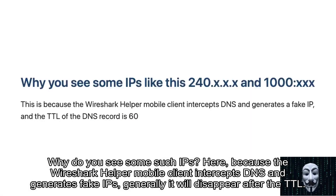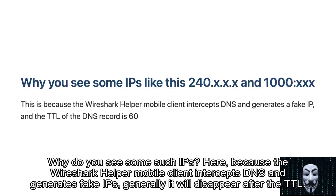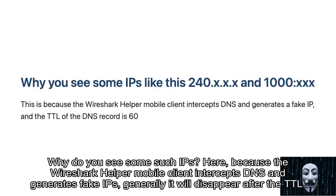Why do you see some such IPs? Because the Wireshark Helper mobile client intercepts DNS and generates fake IPs — these will generally disappear after the TTL.